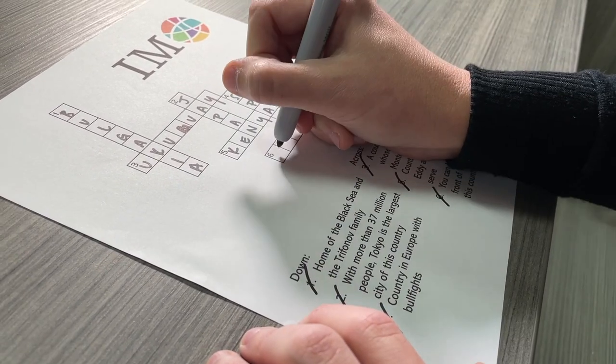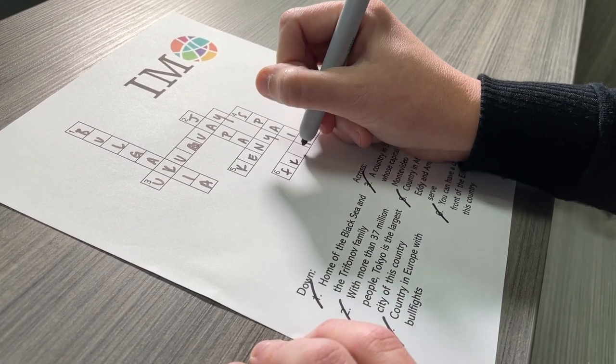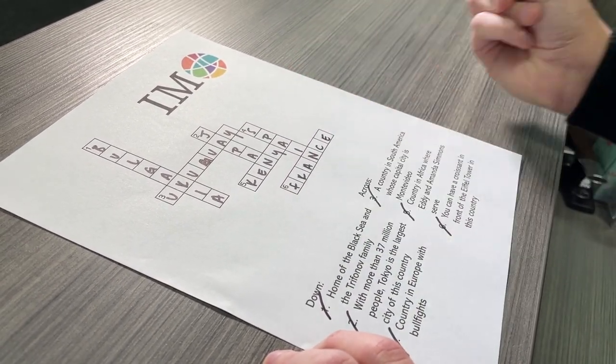Number six, you can have a croissant in front of the Eiffel Tower in this country: France. All done.